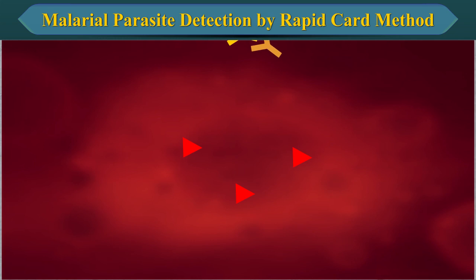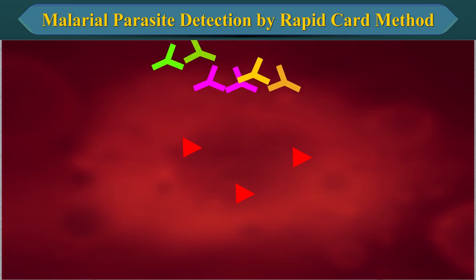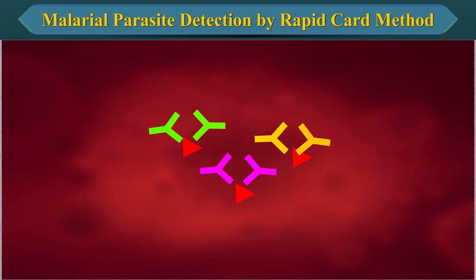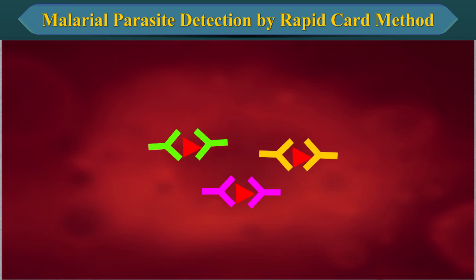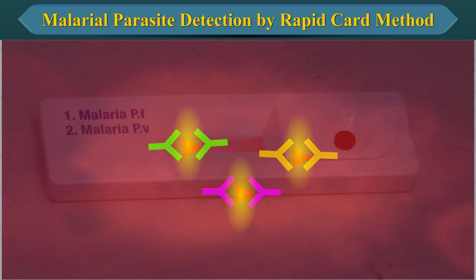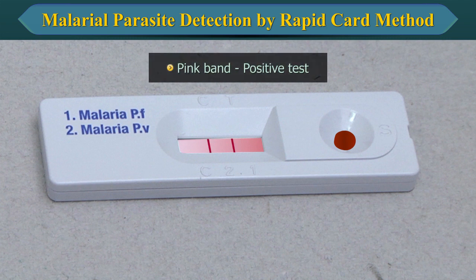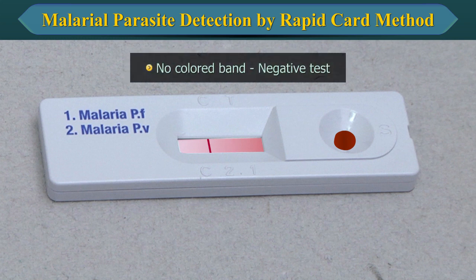Considering that the test sample contains malarial antigens, the complex on reaching the line of the corresponding immobilized antibody gets trapped, forming a pink-purple band which confirms a reactive test result. Absence of a colored band in the test region indicates a negative test result.